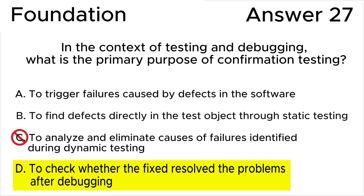Answer C is incorrect because analyzing and eliminating causes of failures identified during dynamic testing is the primary objective of the debugging process, not confirmation testing. Key point: debugging.